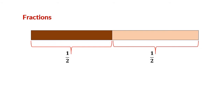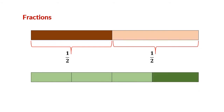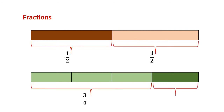Next, look at this second strip. It is divided into four equal parts. The first three parts are colored in light green and we can write it as 3 by 4. The last fraction is colored in green. We can write it as 1 by 4.